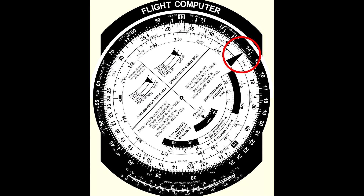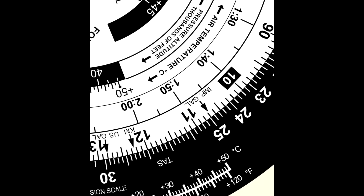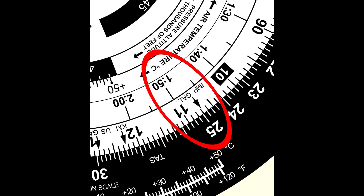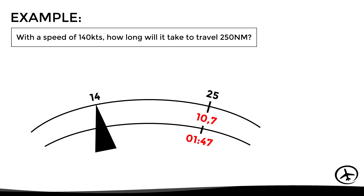Once the speed index is aligned with 14 on the outer scale, we look for the distance of 250 miles, represented by the number 25 on the outer scale. We then read the corresponding time — in minutes on the middle scale or in hours on the inner scale. The results are 107 minutes or 1 hour and 47 minutes. To find speed when given time and distance, align the time with the distance and read the speed at the speed index. For small values of time and distance, a different index should be used.